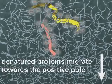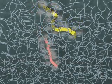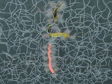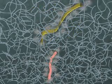The migrating polypeptides are retarded by the tangled network of polyacrylamide. Smaller polypeptides travel more easily and quickly through the pores in the network than do larger polypeptides.